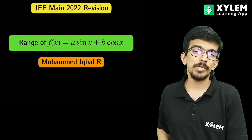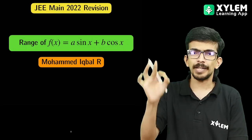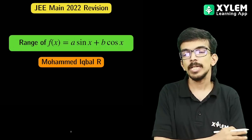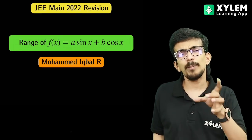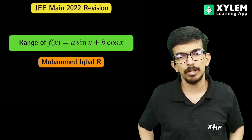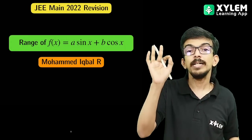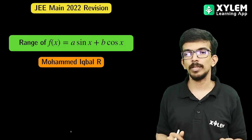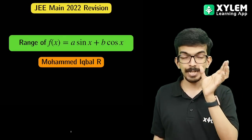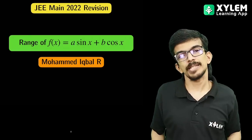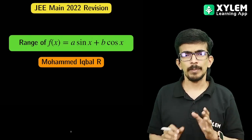We are going to continue to do a revision. Today we are going to talk about a topic in trigonometry. We will talk about some questions about trigonometry — specifically about the expression a sin x plus b cos x. This is very common and we will talk about some examples.